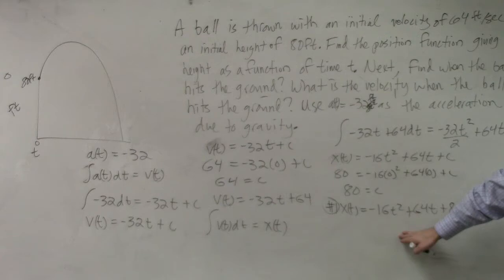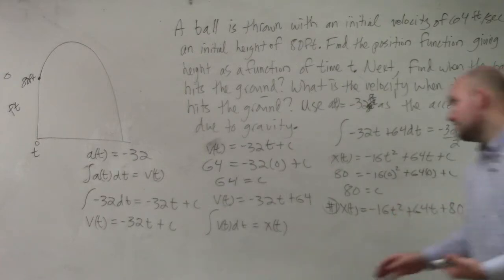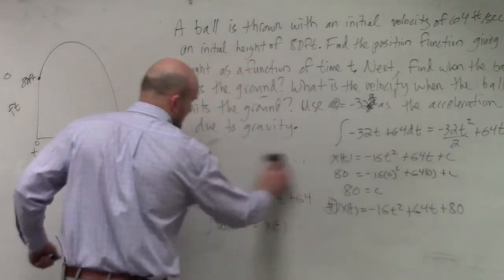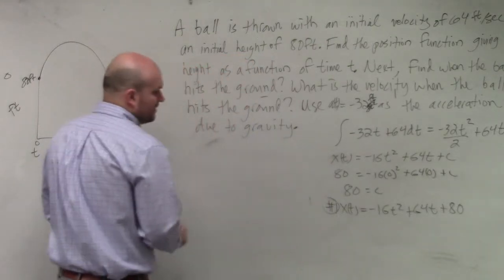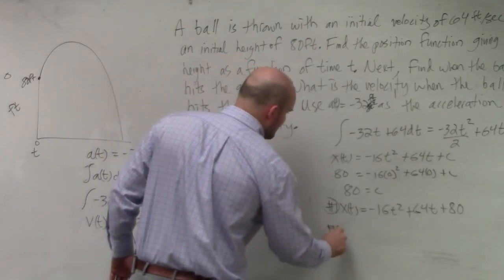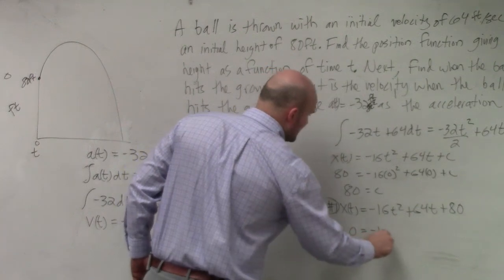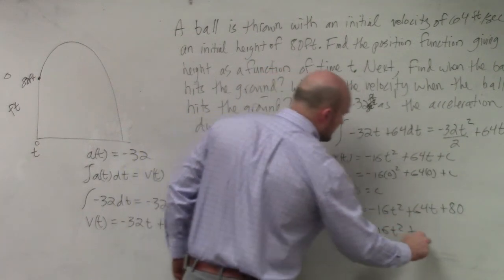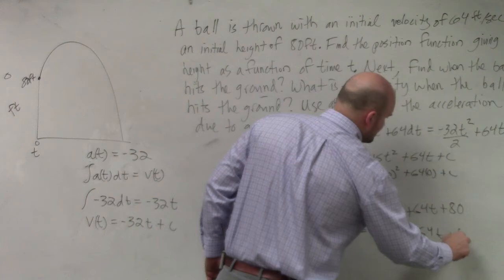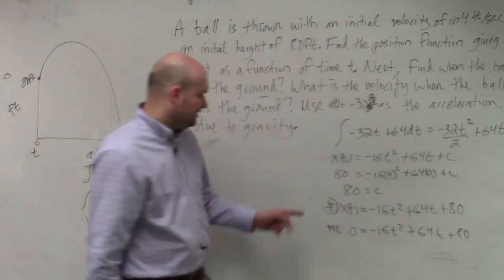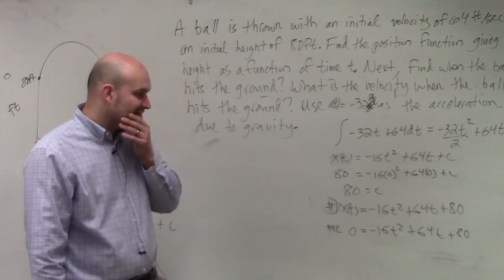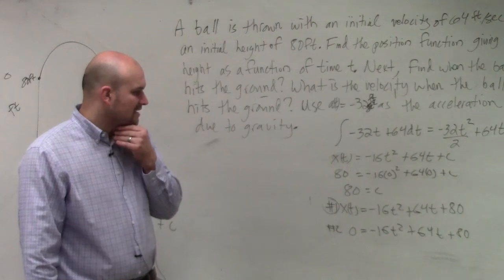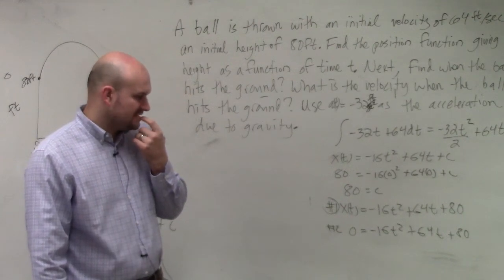So we talked about this. The position, the ball hits the ground when x of t is equal to 0. So unfortunately, I'm going to erase this stuff over here. We know that question number two occurs when 0 equals negative 16 t squared plus 64 t plus 80. And then I look to see what I can factor out. I know I can factor out an 8.